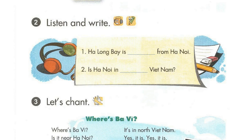Activity two. Listen and write. One. Where's Ba Vy? It's far from Ha Noi. Two. Is Ha Noi in North Vietnam?